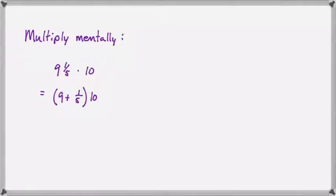And I think that will make it a little easier for you to see what's happening here. All we have to do now is distribute the 10. So 10 times nine is 90.